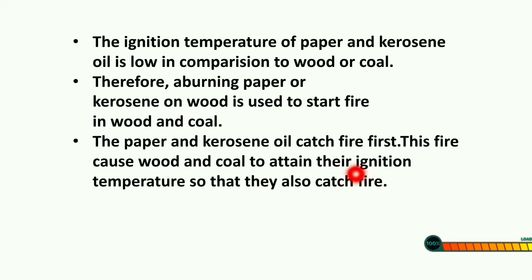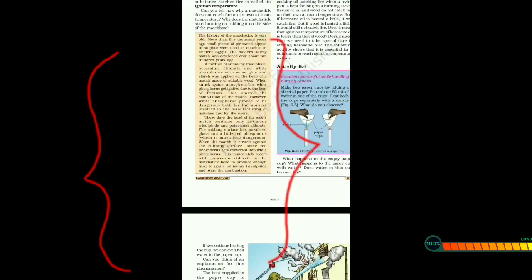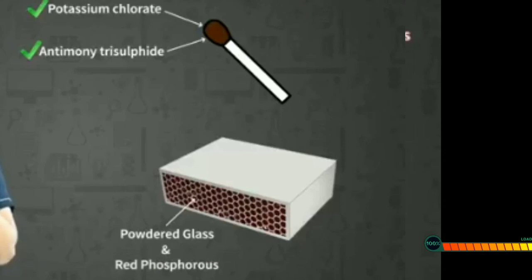The history of the matchstick is very old. About 5000 years ago, small thin pieces of pine wood dipped in sulfur at one end were used as matchsticks in ancient Egypt. The modern safety matchstick was developed only about 200 years ago. In modern days, we use antimony trisulfide and potassium chlorate for safety purposes, and the rubbing surface has powdered glass and a little red phosphorus, which is less dangerous.